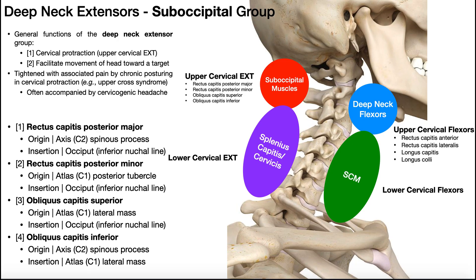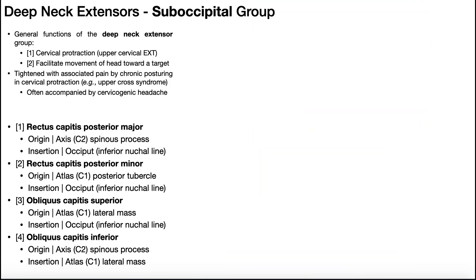In the previous video, we talked about the deep neck flexors. This was a group of four very small, very weak muscles on the anterior surface of the cervical vertebrae that act mainly to retract the cervical spine by producing flexion of the upper cervical spine. Now we're going to shift gears and talk about the suboccipital muscles, which lie on the opposite side of the upper cervical spine and act mainly to extend that region — so these are the deep neck extensors.